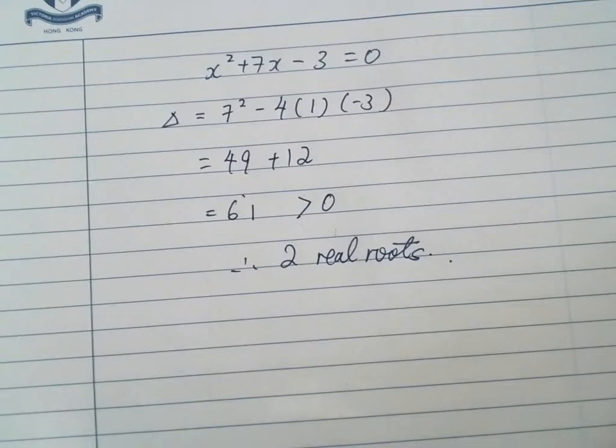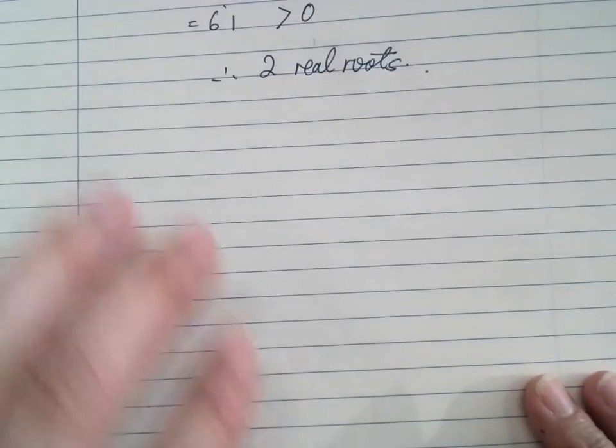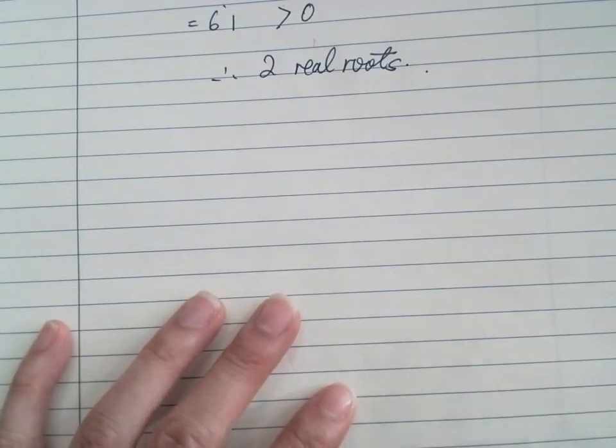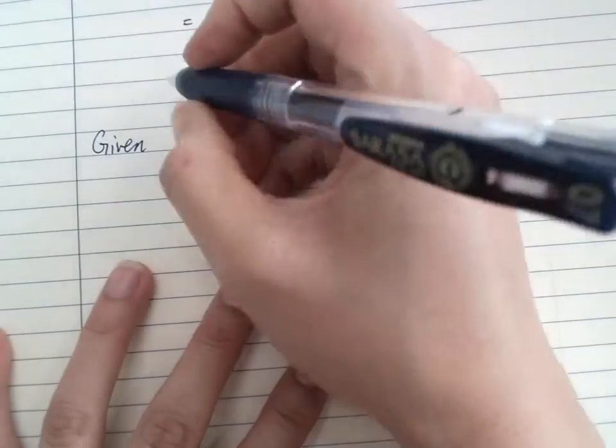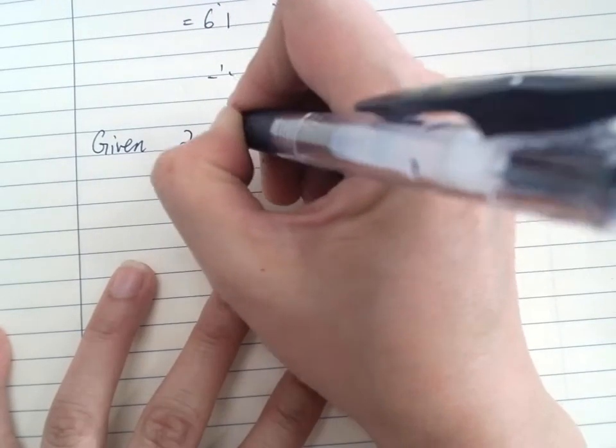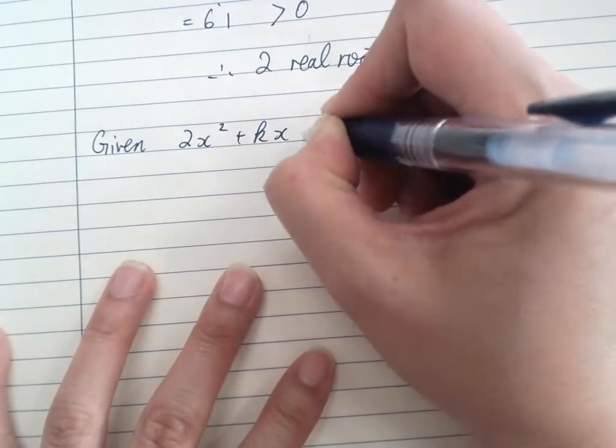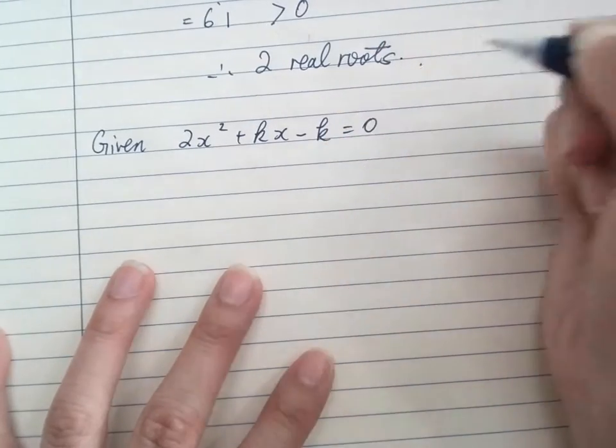Nice and easy. But definitely you won't see that simple things in your exam. So you've got something more annoying. That will be something like this. Given 2x squared plus kx minus k equals to 0.